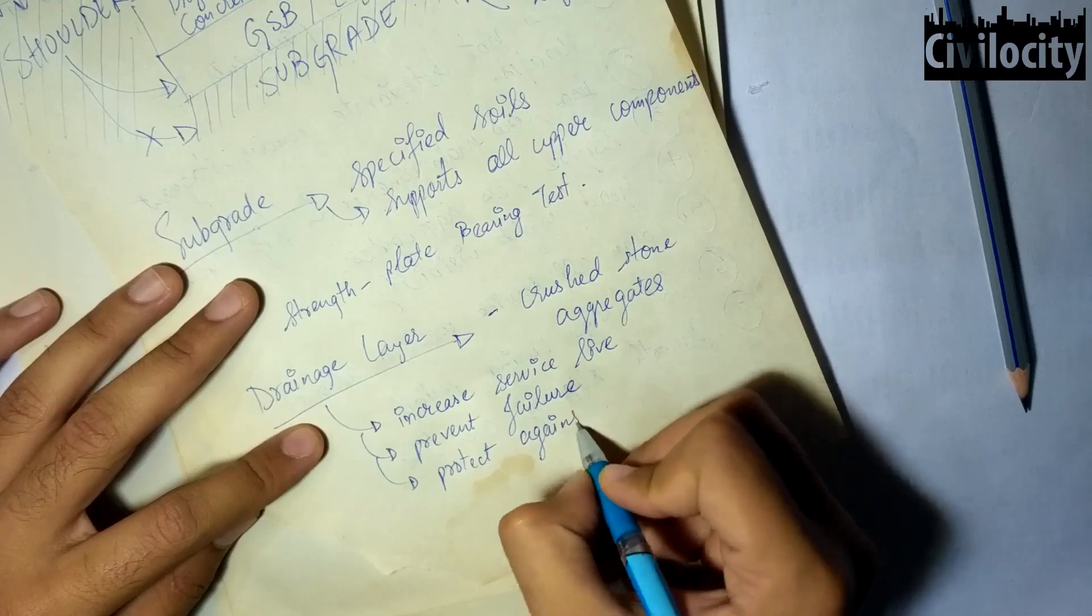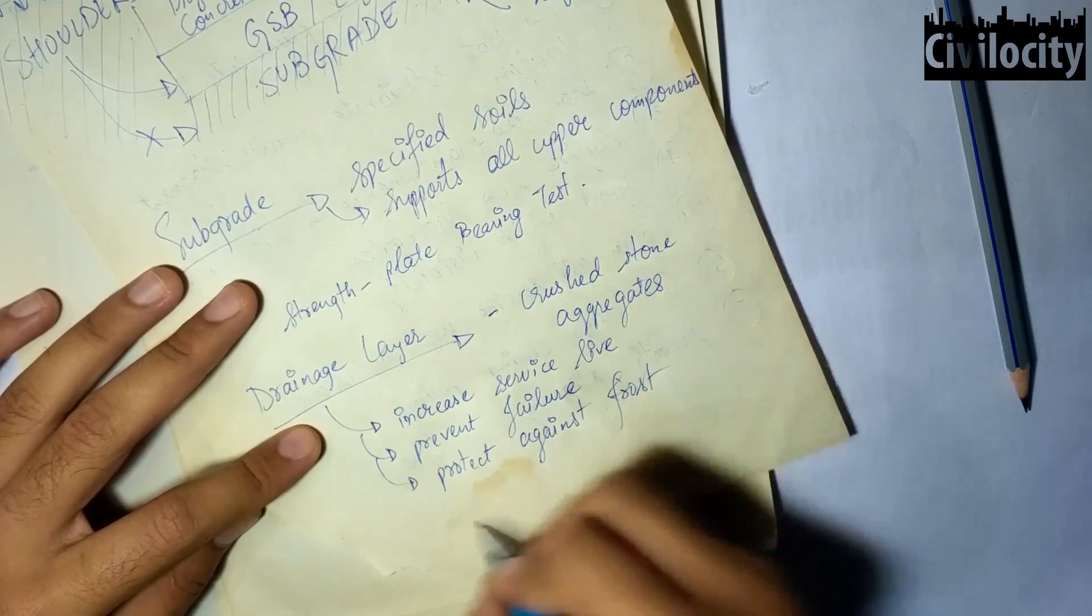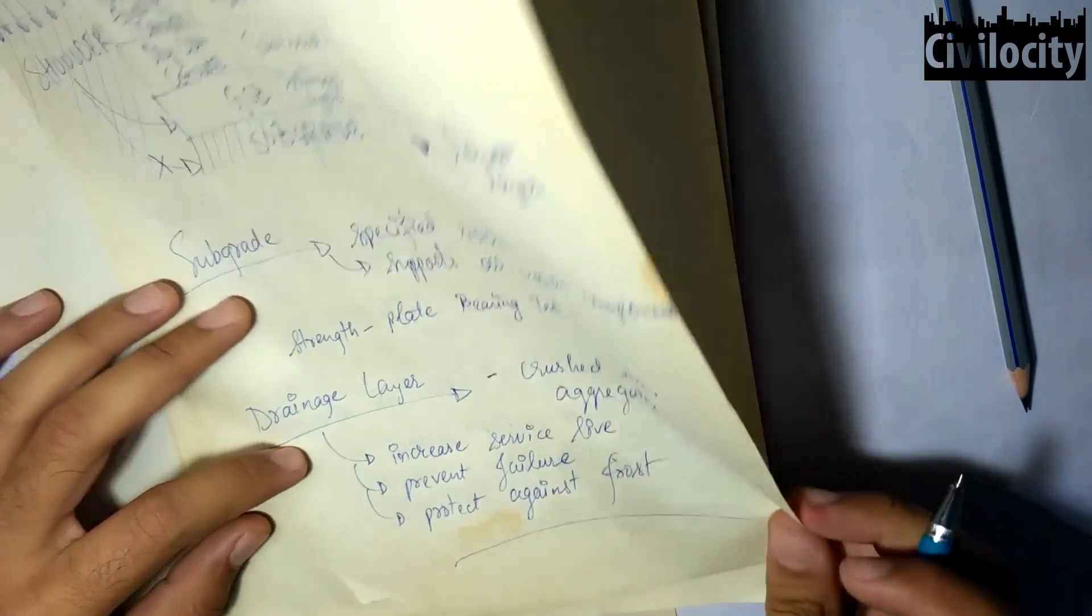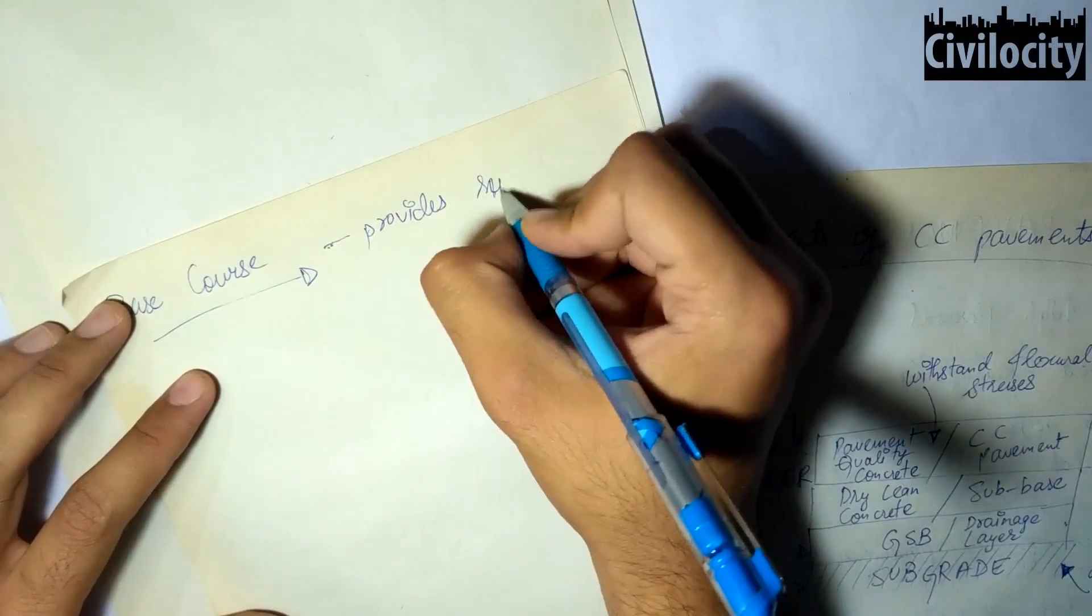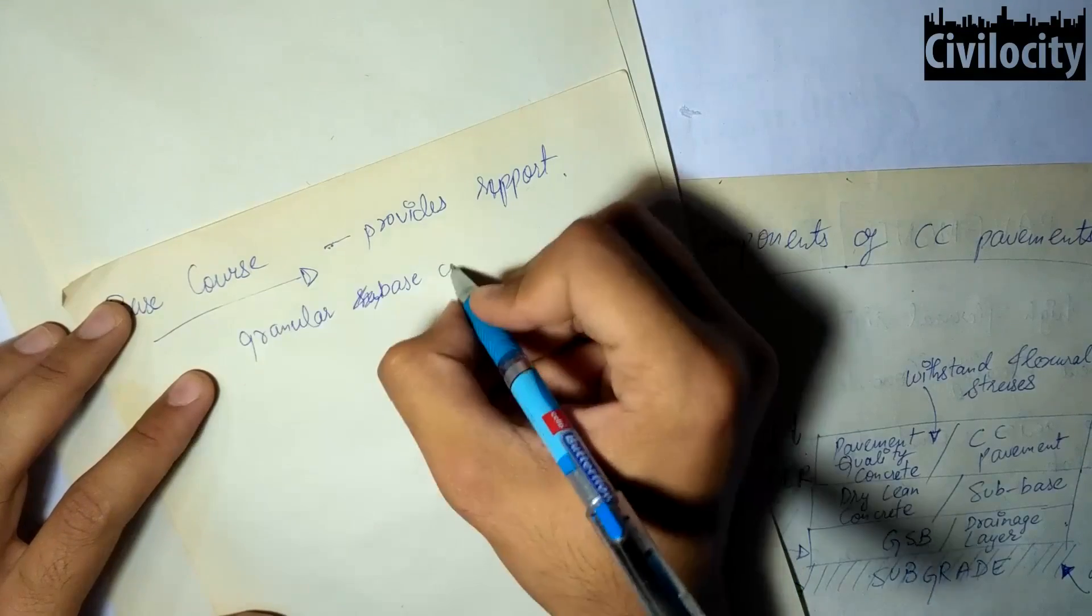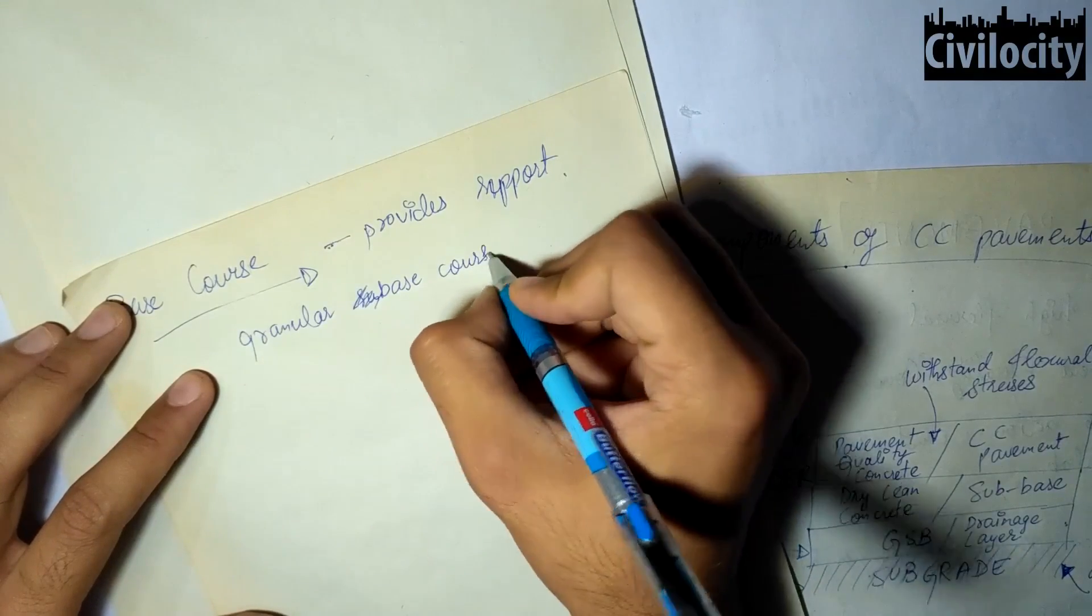And to protect the subgrade against frost action in frost susceptible areas. Now let's talk about the base course. A base course is used to provide support to the topmost layer.